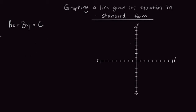So today I want to talk about graphing a line given its equation in standard form. In standard form, the equation of a line looks something like this: ax plus by equals c. So for example, 2x plus 3y equals 6.